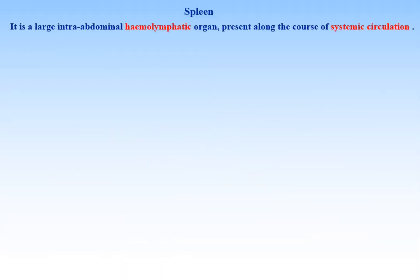Spleen. It is a large intra-abdominal hemolymphatic organ present along the course of systemic circulation.